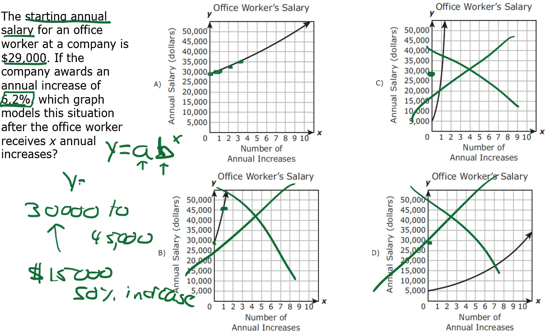Since our starting amount is $29,000, we put $29,000 in for A. Since we're growing by 6.2%, it would be 1 plus 0.062, or 1.062 as our growth factor, to the X.